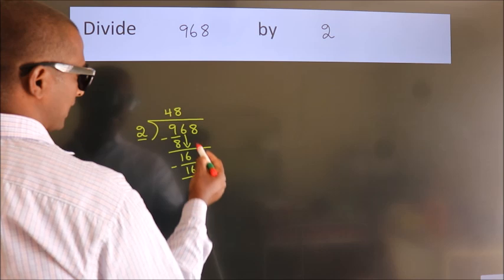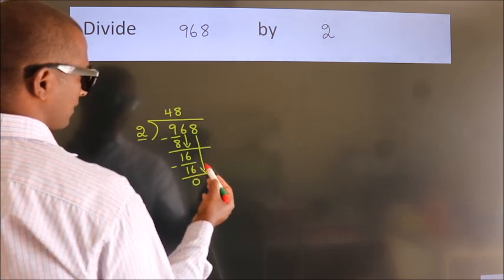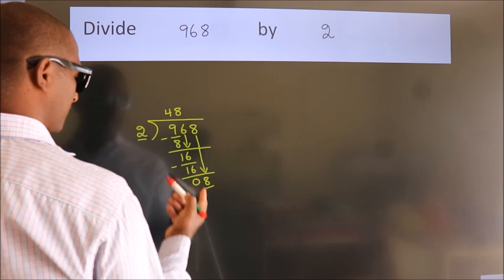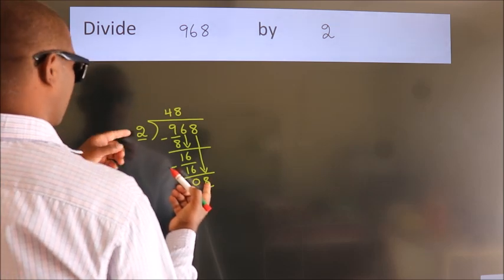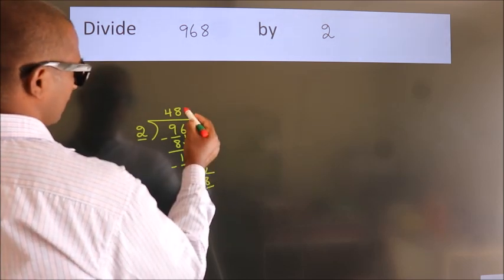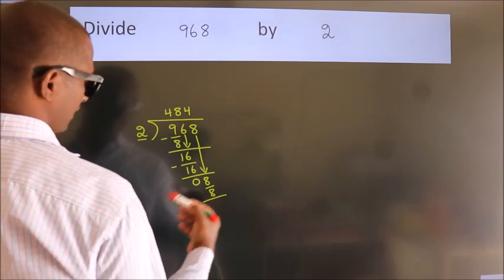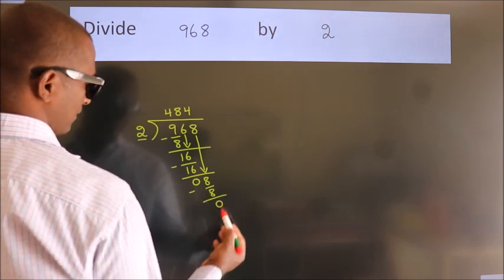After this, bring down the beside number. So 8 down, so 8. When do we get 8? In 2 table, 2 fours 8. Now we subtract. We get 0.